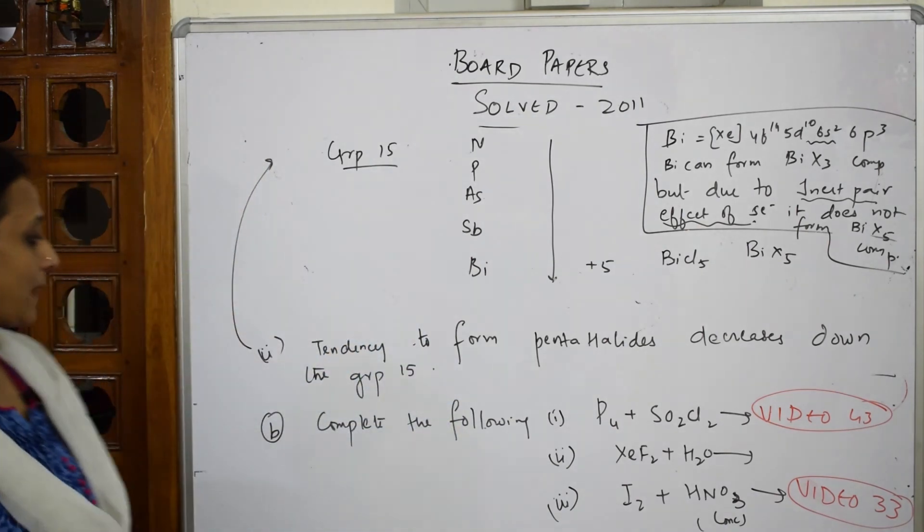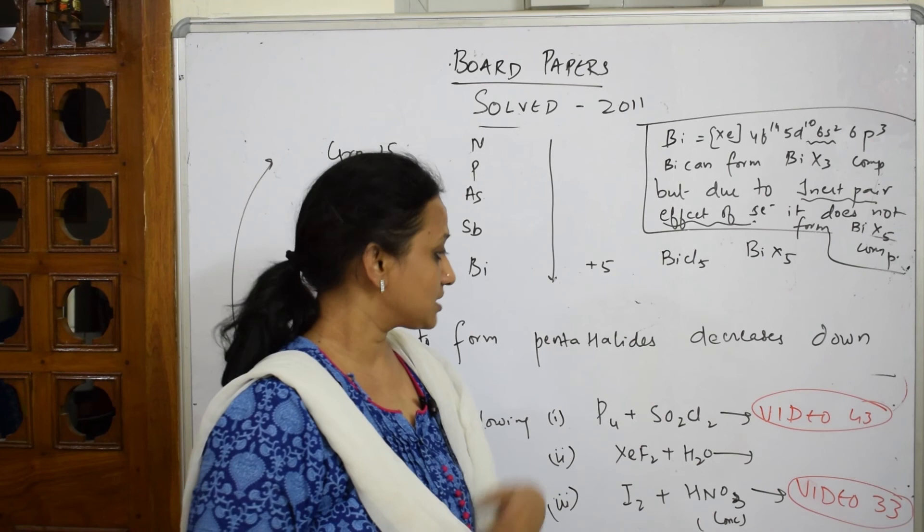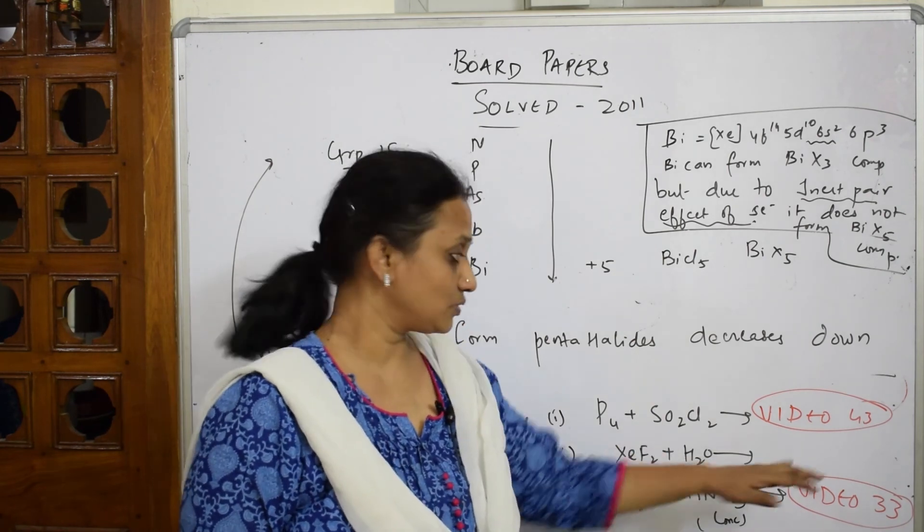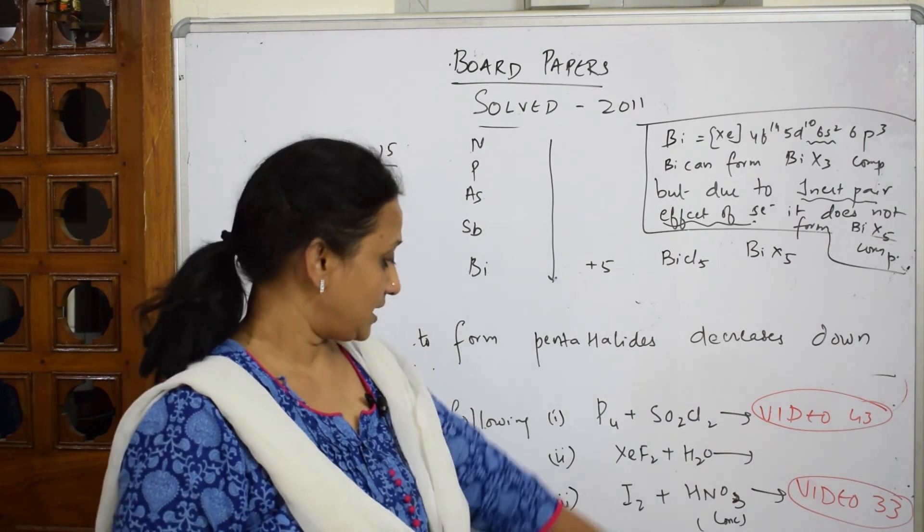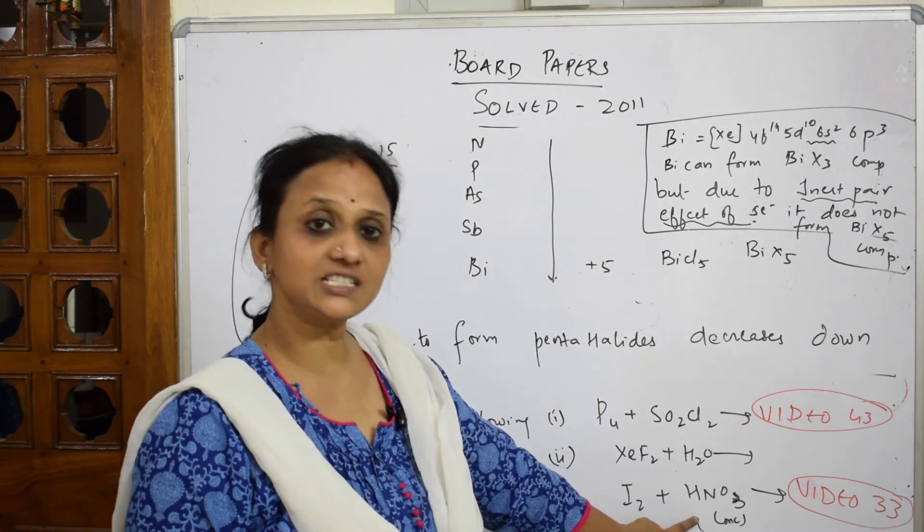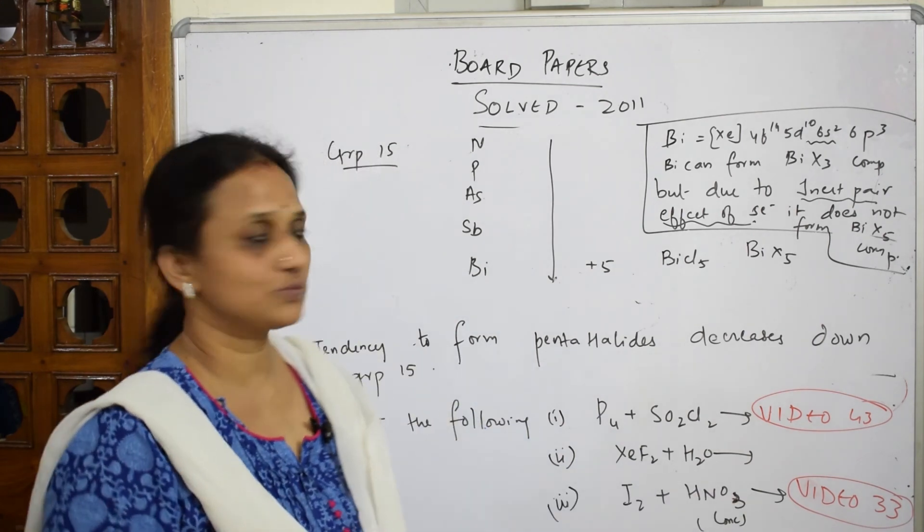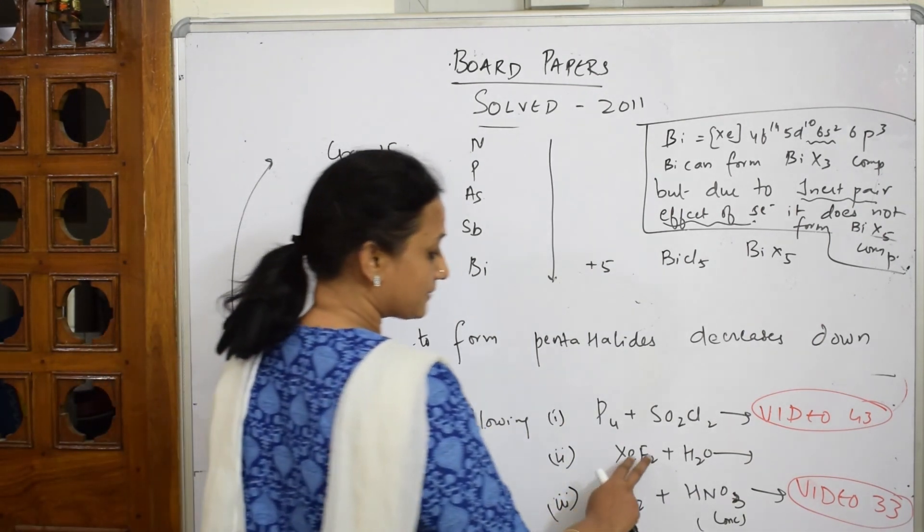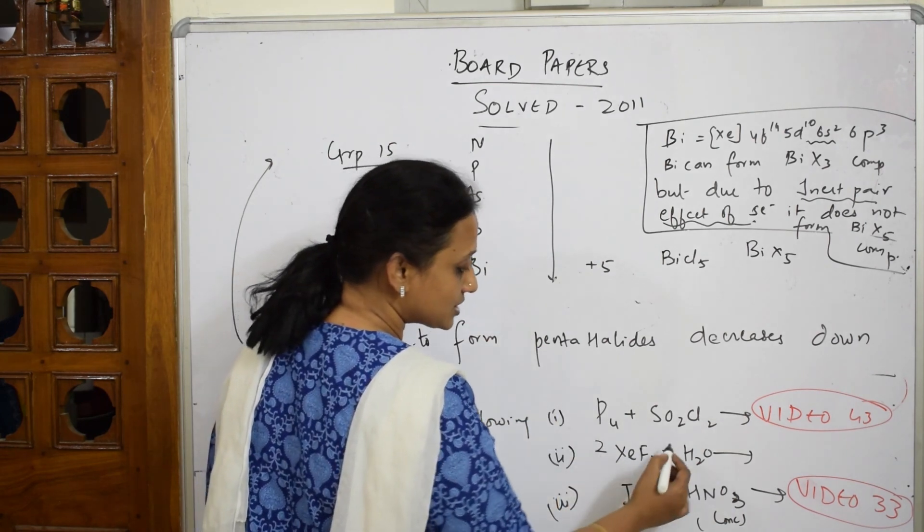This question is over. Now complete the following: they've given P4 + SO2Cl2 (sulfuryl chloride, not thionyl chloride) - I did this in video number 43. Next, iodine - this is the oxidizing property of nitric acid which I did in video number 23. Please watch the video.